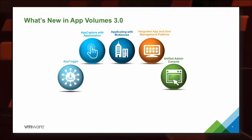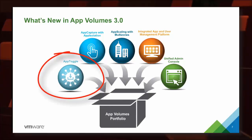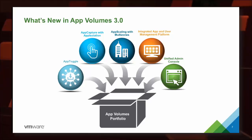What's new inside App Volumes 3? One favorite new feature is App Toggle. App Toggle allows us to package a whole bunch of applications inside one app stack — maybe Office, internet browsers, Adobe, and PowerPoint. Not every user needs all of them, but we don't need to create a whole other stack for each level of user specificity. We can simply toggle on or off certain applications. So a user gets everything except Photoshop — simply toggle that off. App Toggle delivers more efficiently and in a more uniform way.